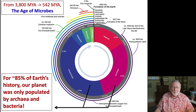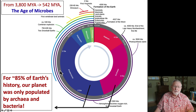For much of the Earth's history — 80 to 85 percent of the Earth's history — microbes have dominated. Ever since life was first discovered about 3.7 to 3.8 billion years ago, up through 542 million years ago, our planet was dominated by microbes, single-celled organisms.